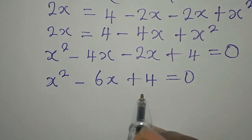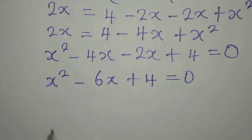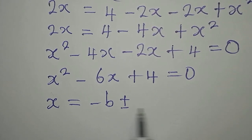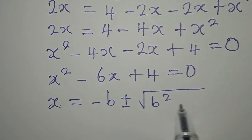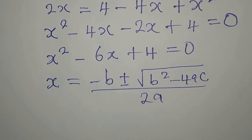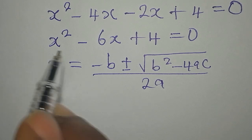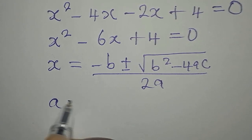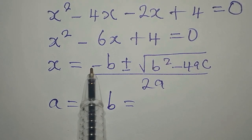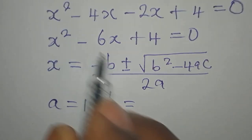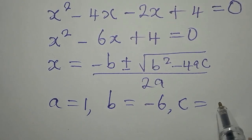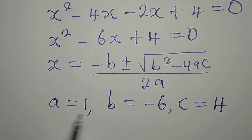This is because minus 4x minus 2x gives us minus 6x. Now we're going to use the quadratic formula: x equals negative b plus or minus square root of b squared minus 4ac, all over 2a. Here a is the coefficient of x squared, so a equals 1; b is the coefficient of x, so b equals negative 6; and c is the constant, which is 4.